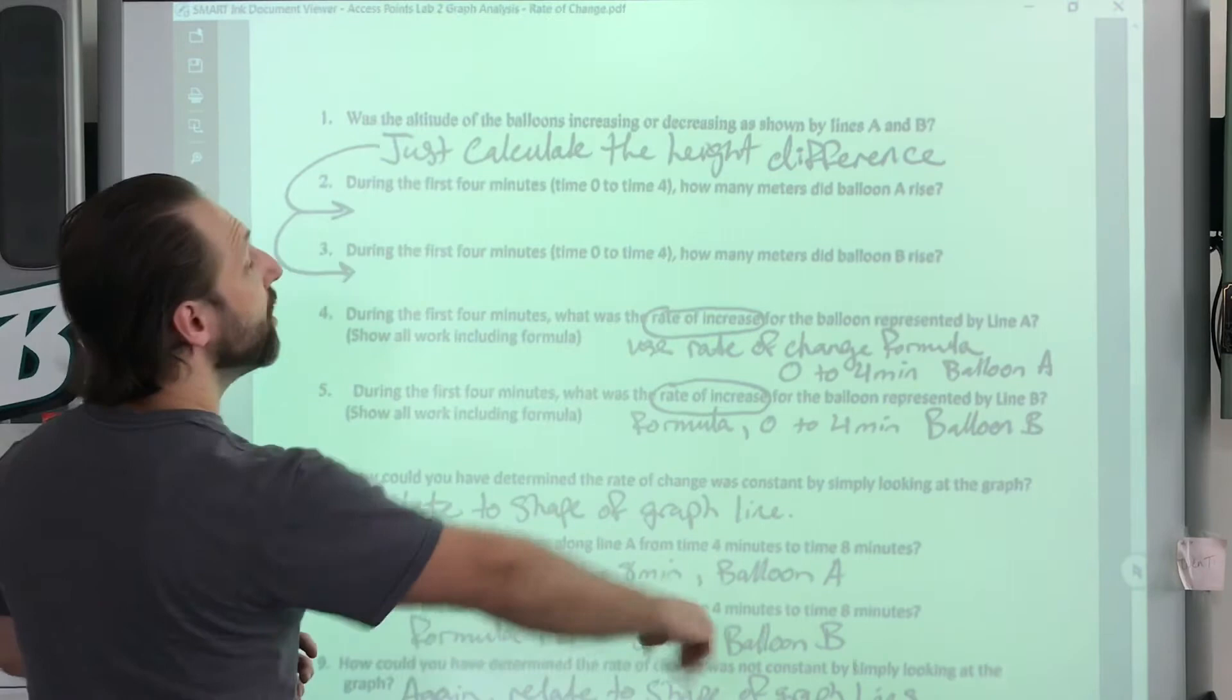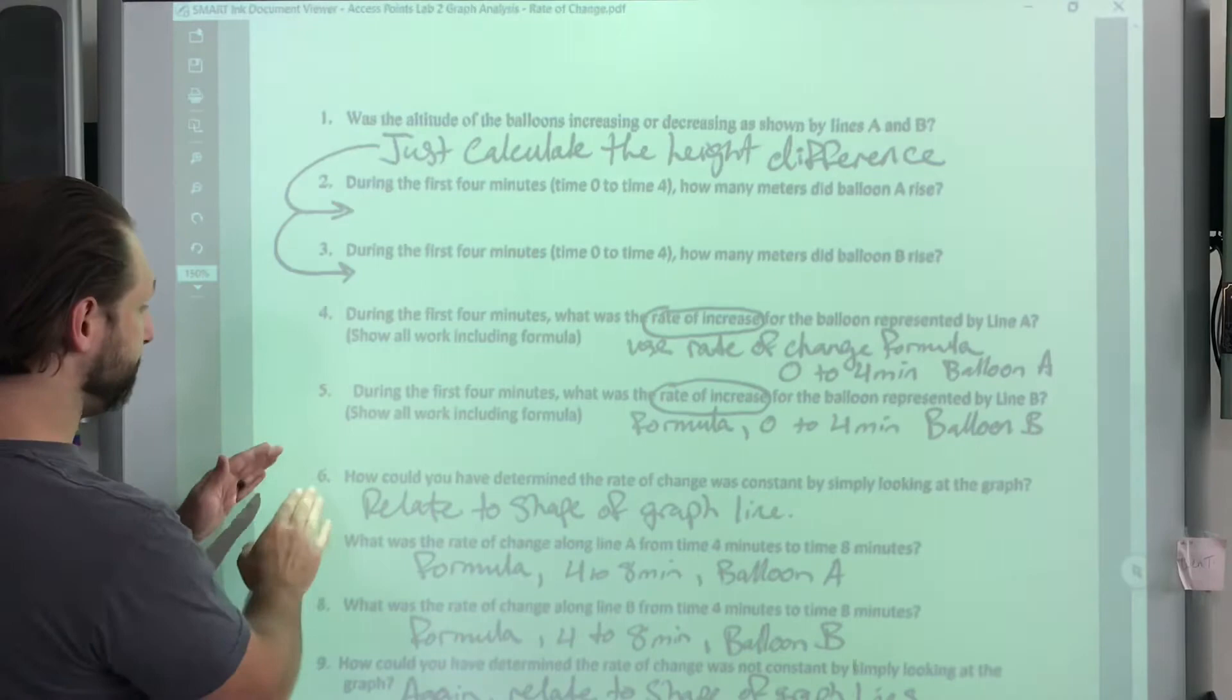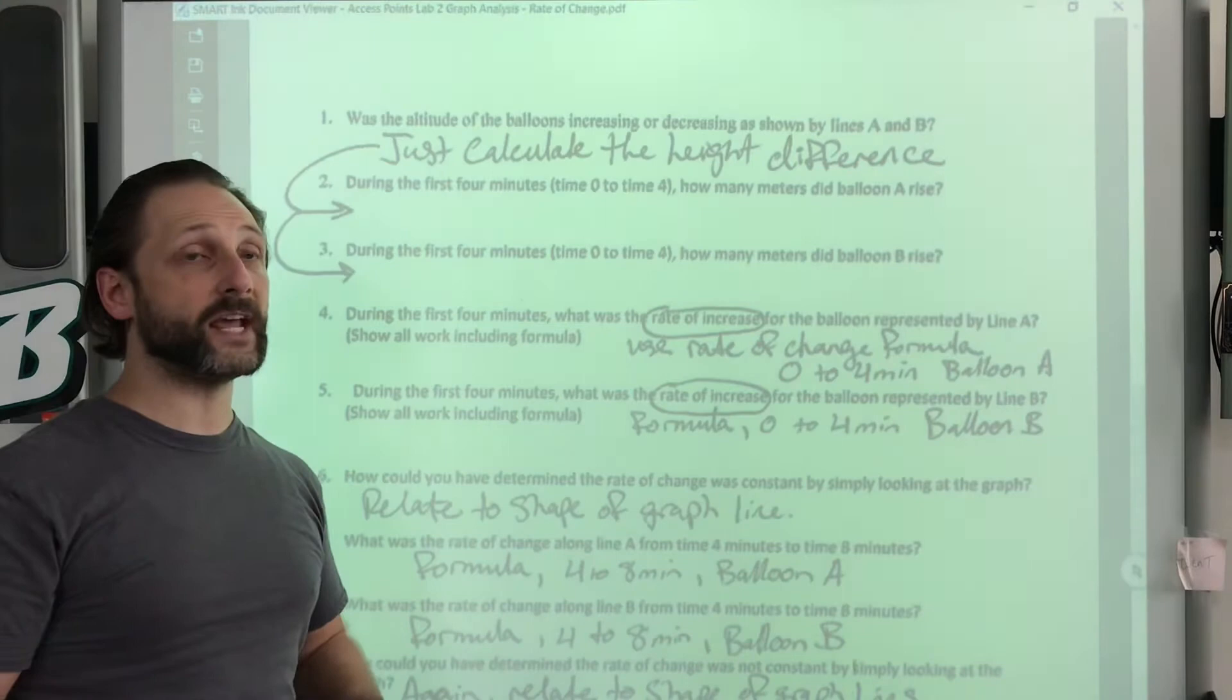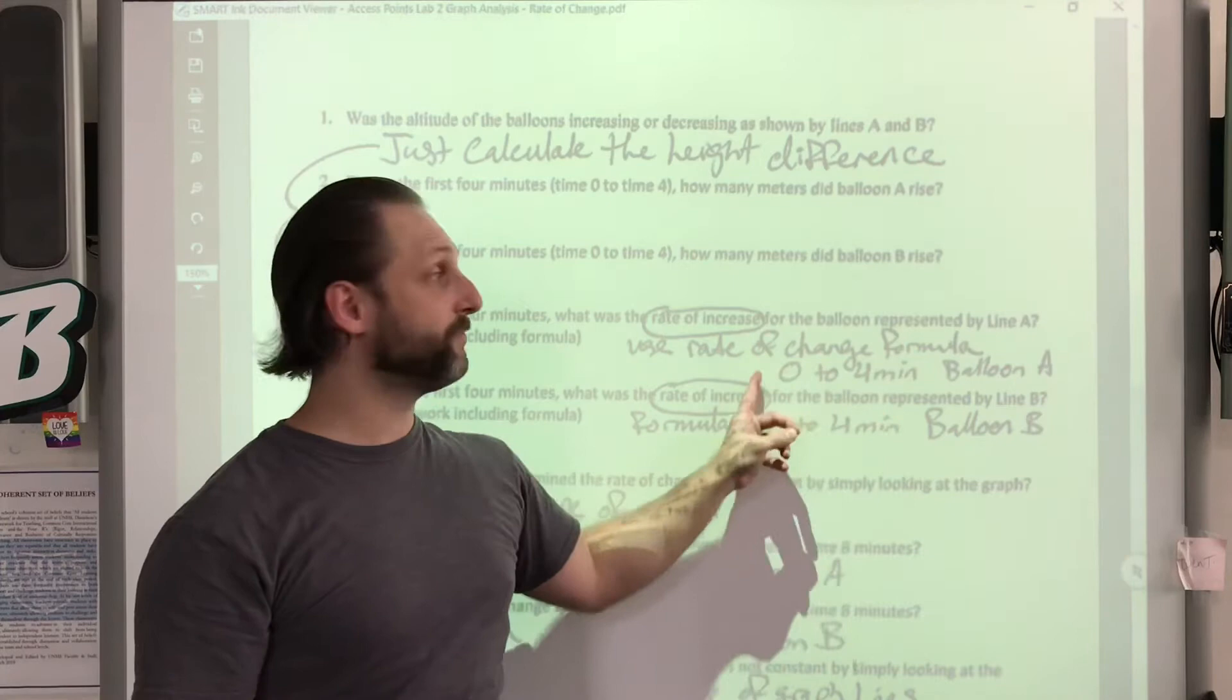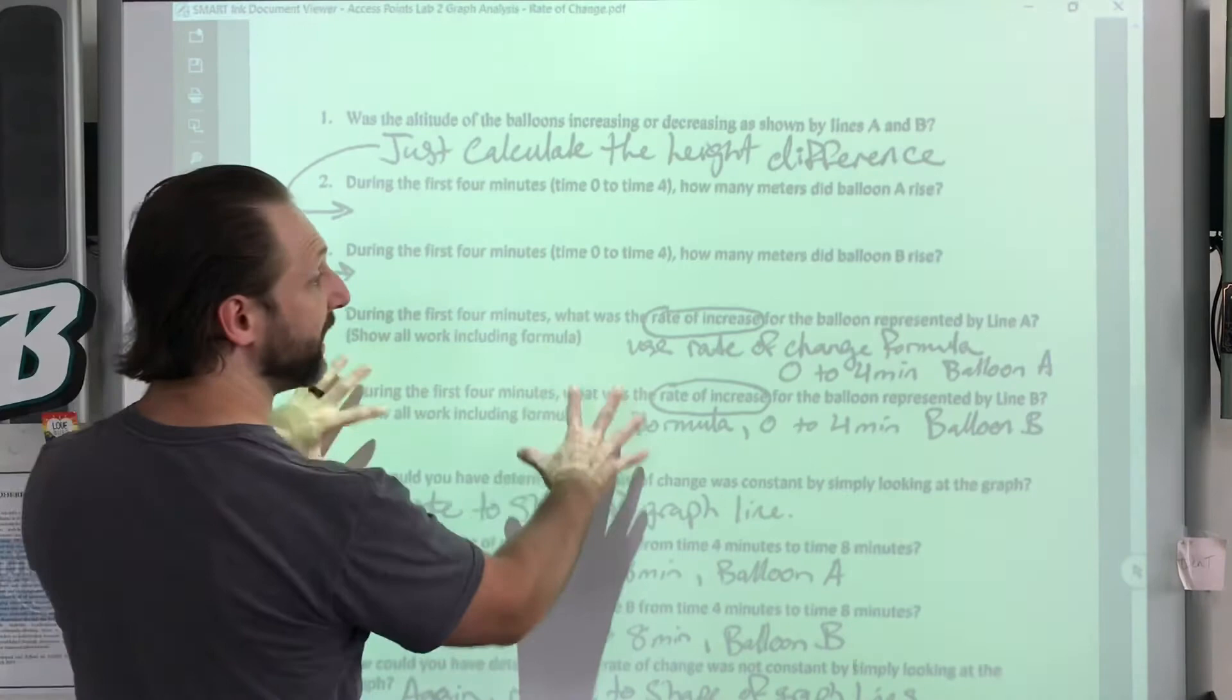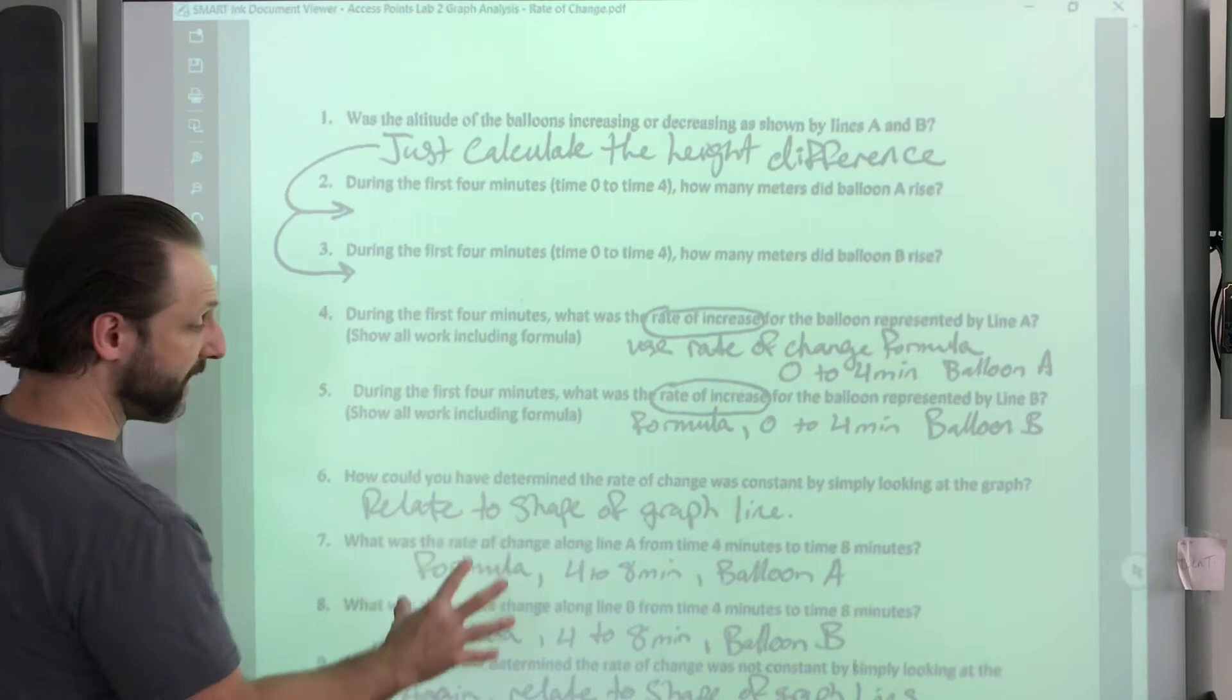So here I want you to understand that for question two and three you're just calculating the height differences. For four, five, seven, eight, you are actually calculating rates of change. What's important is that I've told you rate of increase is rate of change. I'm telling you from this here, it might be difficult to understand what the time frame is and making sure you understand balloon A. So keep in mind what data you're using for balloon A, balloon B, balloon A, balloon B, respectively.